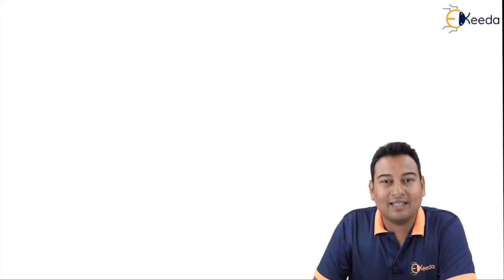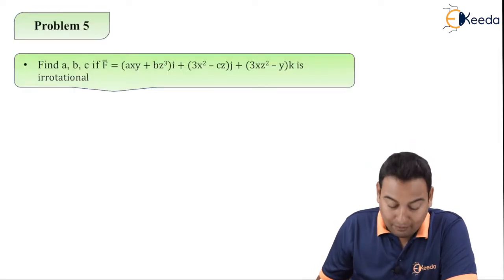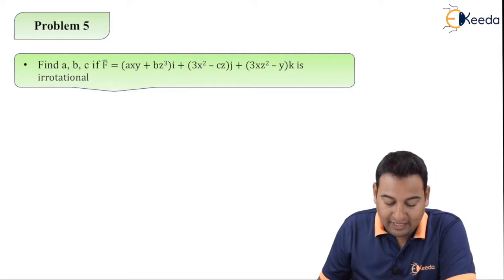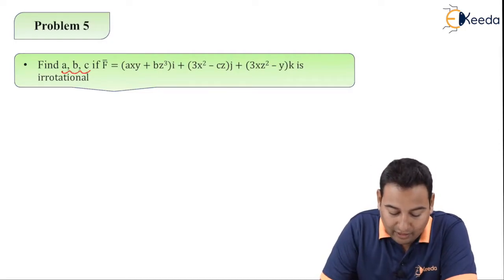Welcome back friends, let's have a look at the given problem. Find the value of A, B, C if F bar is irrotational.